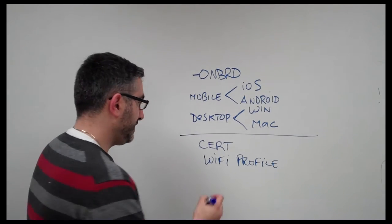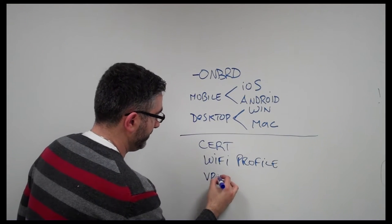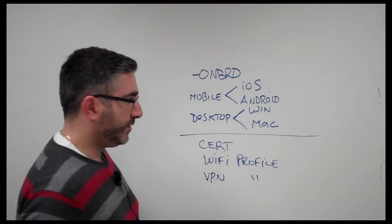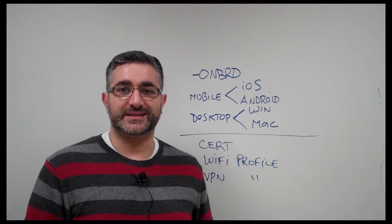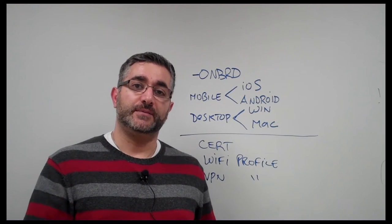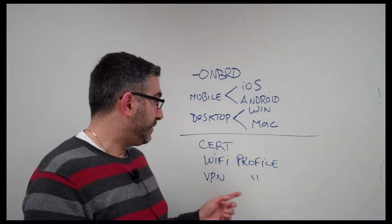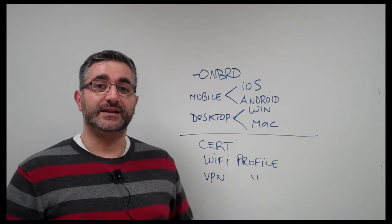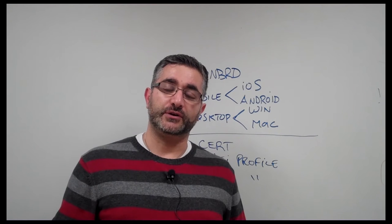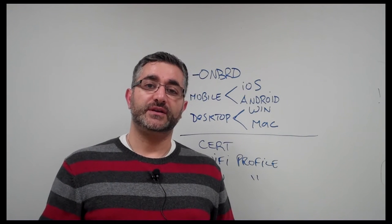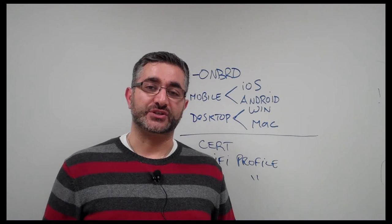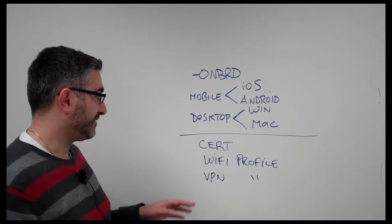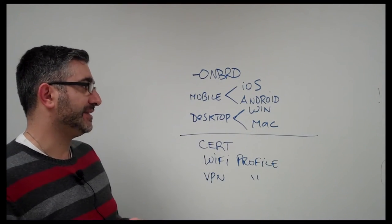The other thing is a VPN profile. A VPN profile for mobile devices is basically the VPN connection information. On the desktop side, we can push down Pulse Secure, the client application. As part of that, we can also push down connection sets. So you have a couple options for how you want to do it on the desktop.